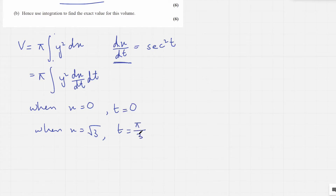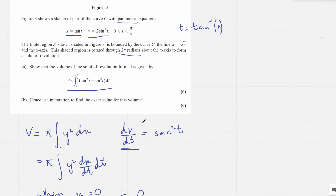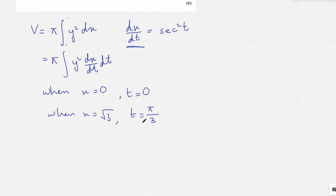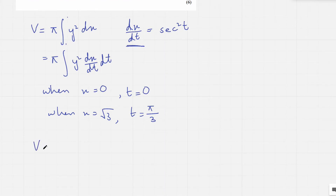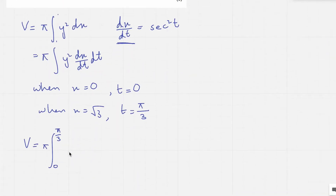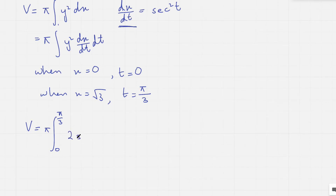The calculator should be in radians mode for this one. Now we have found everything. So V equals pi times the integral from 0 to pi over 3. Then y is 2 sin squared t, so y squared is 2 sin squared t, whole squared, and then dx over dt is sec squared t, integrated with respect to t.